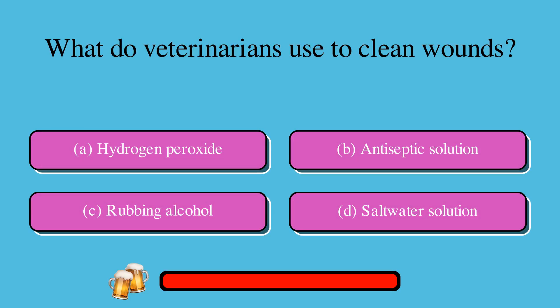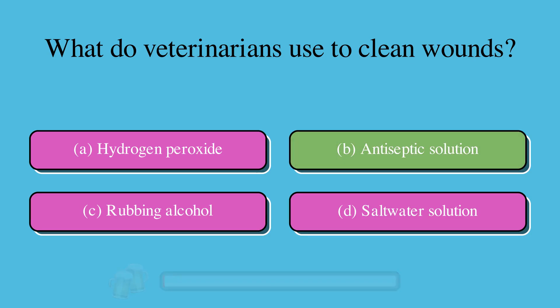What do veterinarians use to clean wounds? A. Hydrogen peroxide, B. Antiseptic solution, C. Rubbing alcohol, or D. Saltwater solution. The correct answer is B. Antiseptic solution.